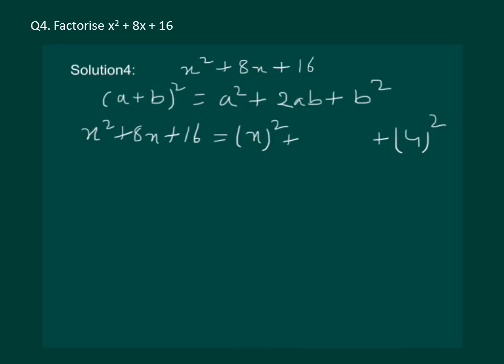So, without seeing the question, let us try to find 2ab. We have 2, a as x, and b as 4. So, this will change to x whole square plus 8x plus 4 whole square. This means that the identity is valid for our question.